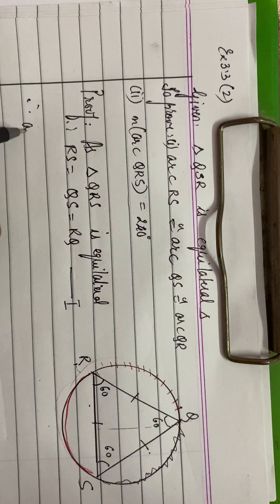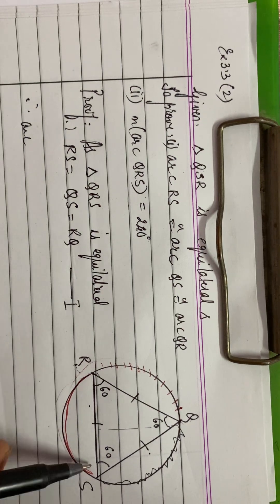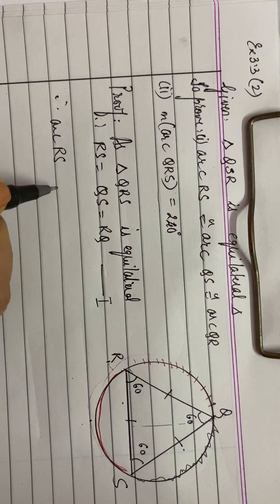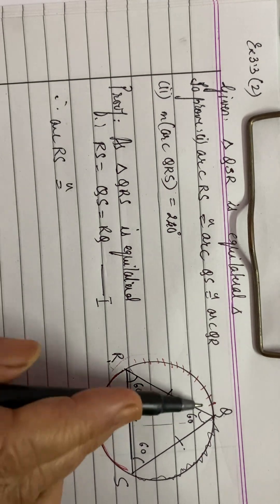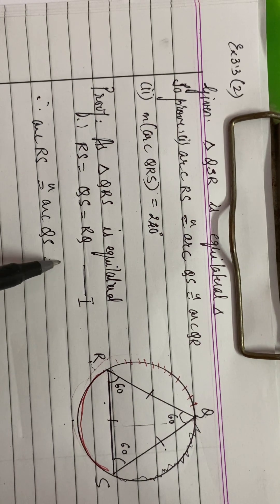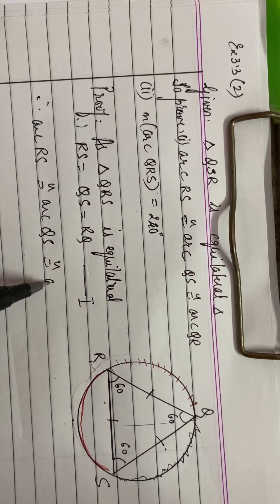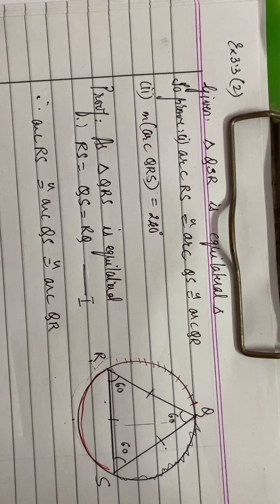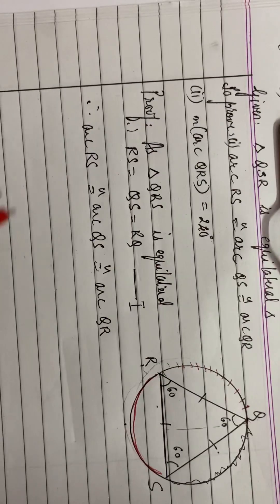I can write here, therefore arc RS is congruent to arc QS is congruent to arc RQ or QR.